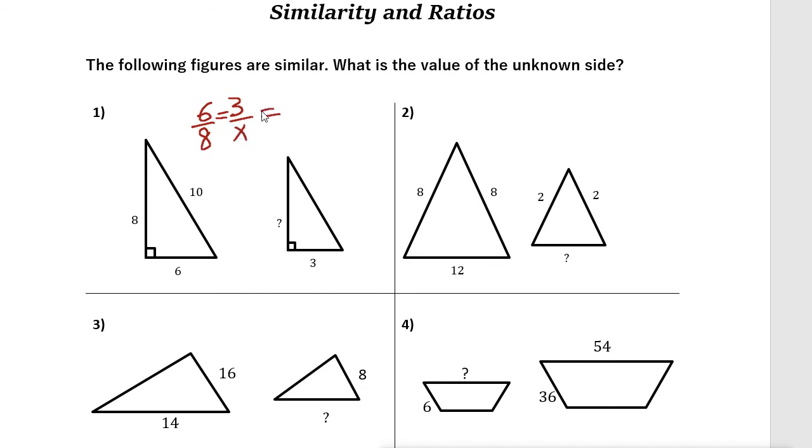So we can write a proportion: 6 to 3 is 8 to what number. If you notice, 6 is twice 3, so X must be 4, which is half of 8. But you can also use cross multiplication.